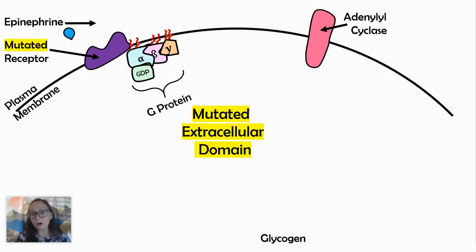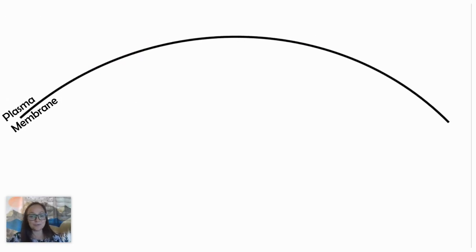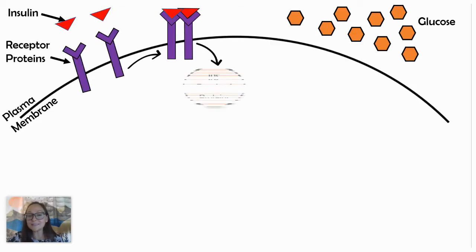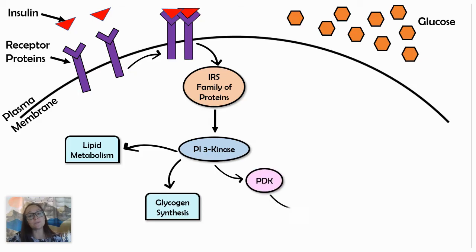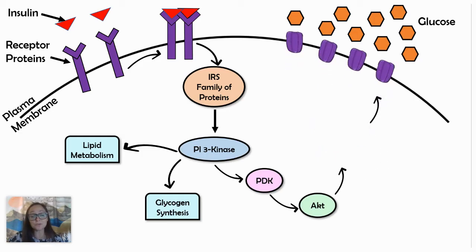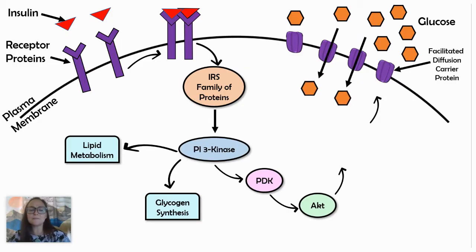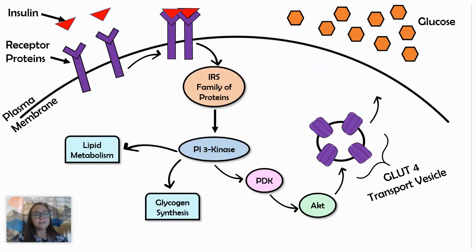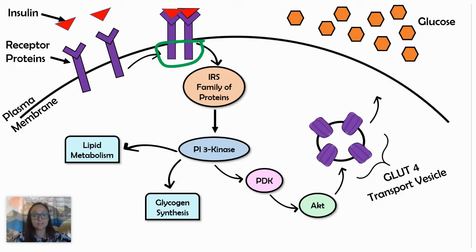Mutations, while not always bad, can be detrimental when we talk about signaling cascades that rely on properly formed proteins. Now let's look at another example with insulin. Insulin is the ligand that activates a signal transduction pathway that ultimately results in blood sugar levels decreasing — by having the GLUT4 transport vesicle move to the cell membrane and having protein channels allow glucose to diffuse in. These receptors are receptor tyrosine kinases, and sometimes you can have mutations on the intracellular portion. With epinephrine we saw a mutation in the extracellular region, but you could easily have a mutation in the DNA that codes for the intracellular part.